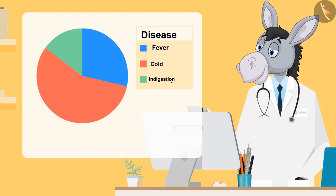As you can see in the chart, number of children who got sick due to cold are represented by red color. Number of children who got sick due to fever are represented by blue, and the number of children who got sick due to indigestion are represented by green color.